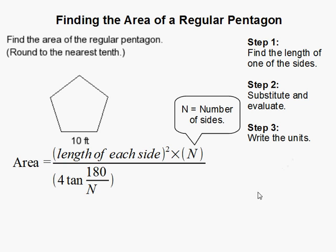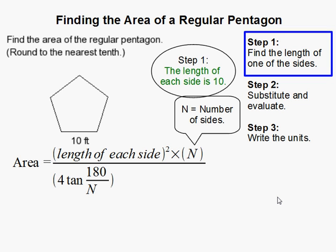How to find the area of a regular pentagon when you're only given the length of a side. Okay, so first thing is to find the length of just one of the sides, because since it's a regular pentagon, you know that all the sides are equal.